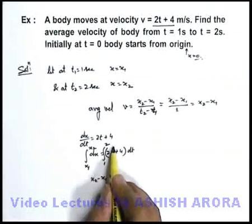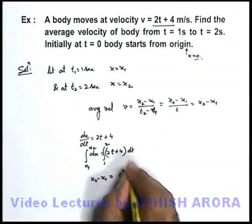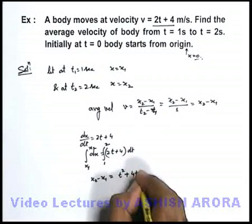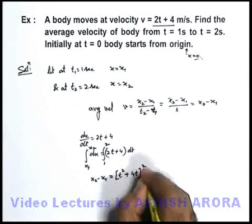The right-hand side on integration gives us t² + 4t. We apply the limits from 1 to 2.